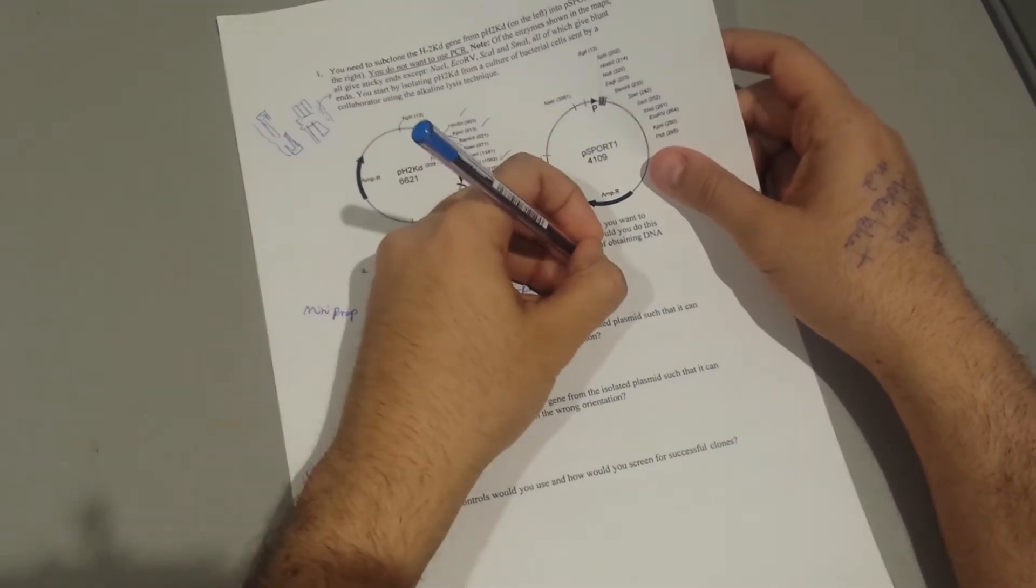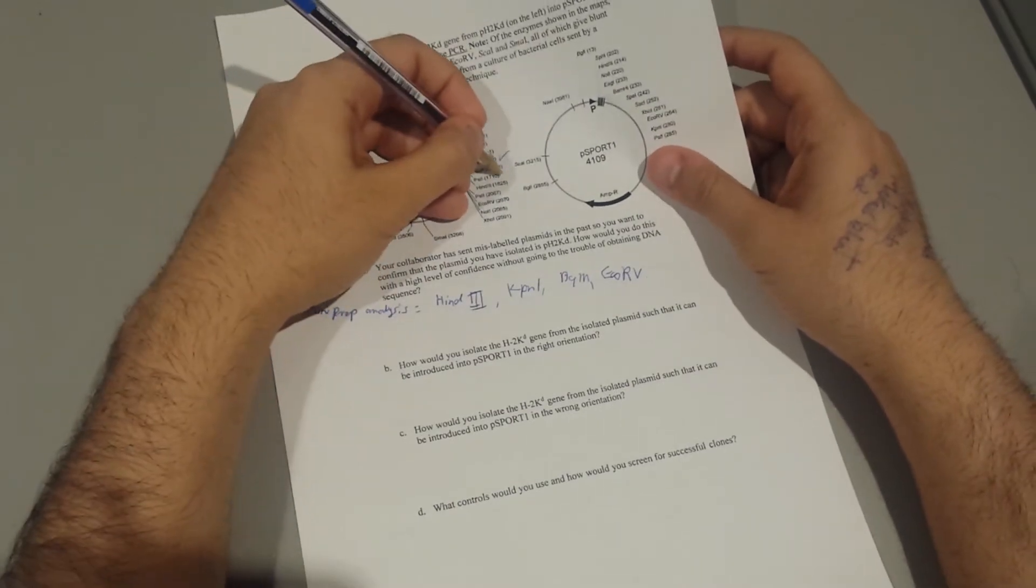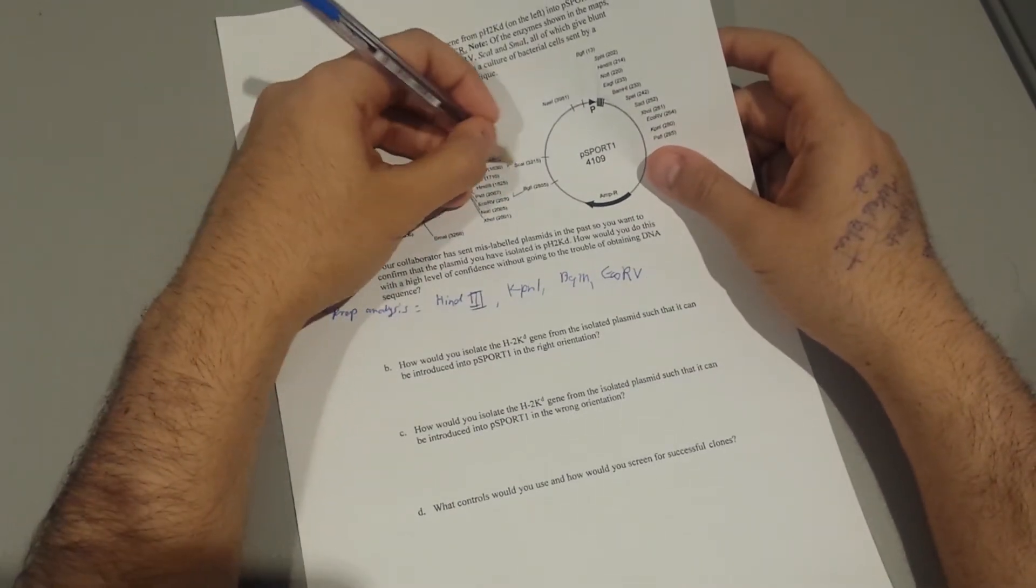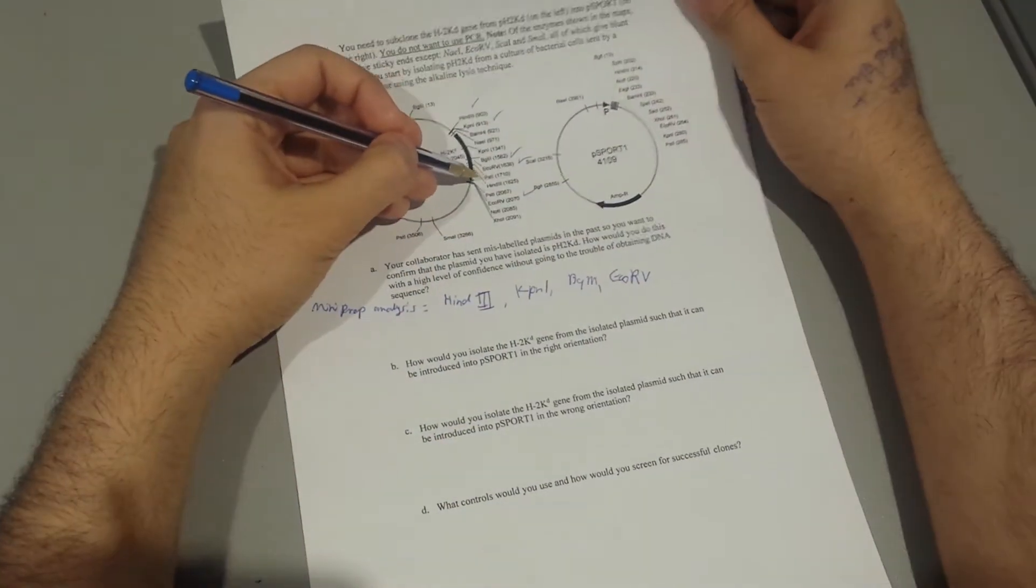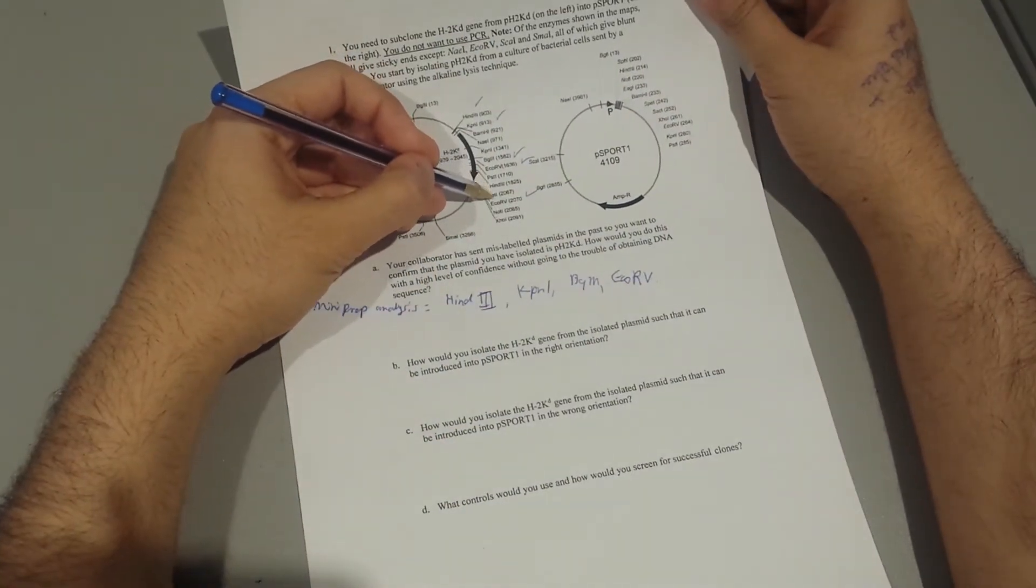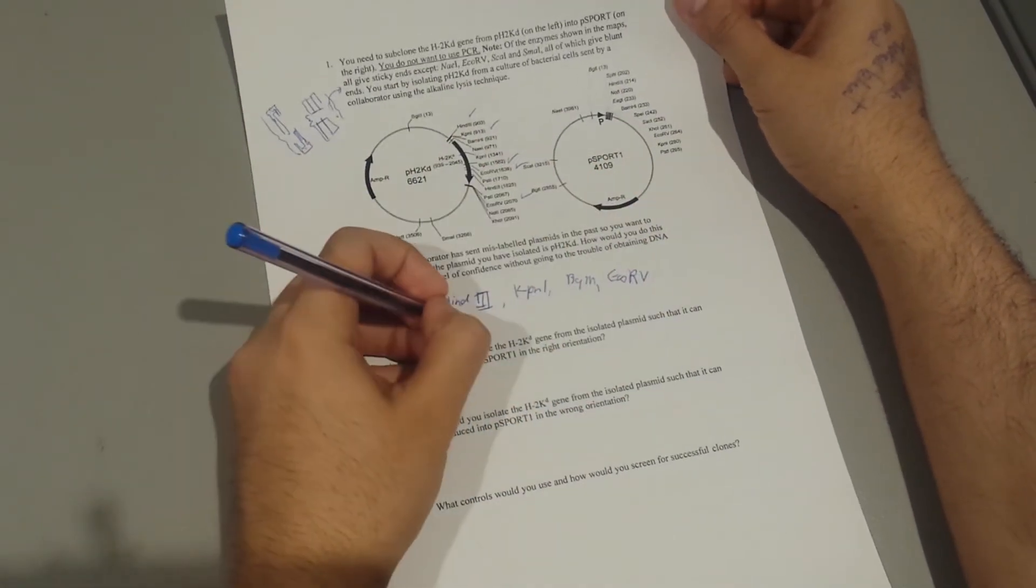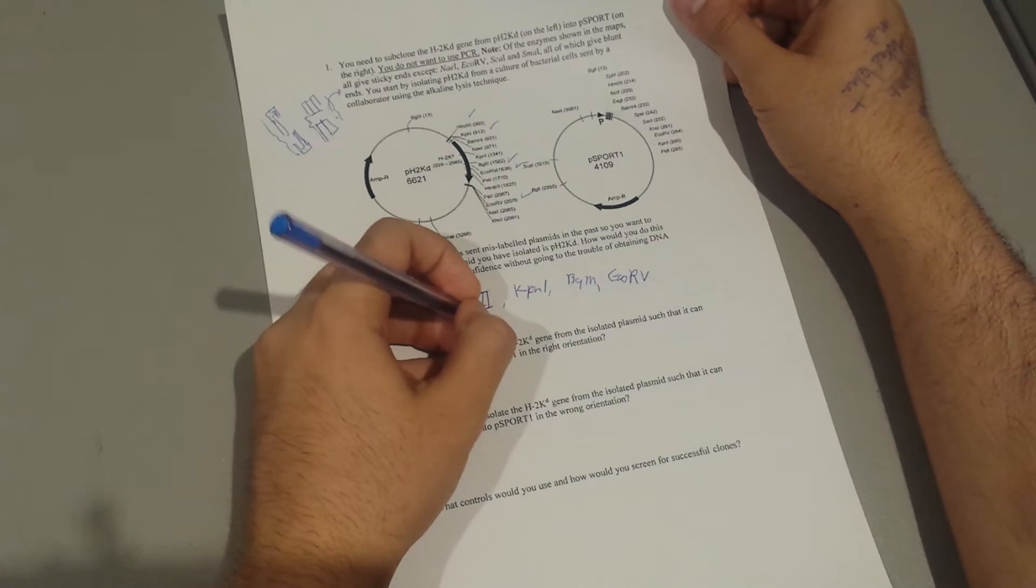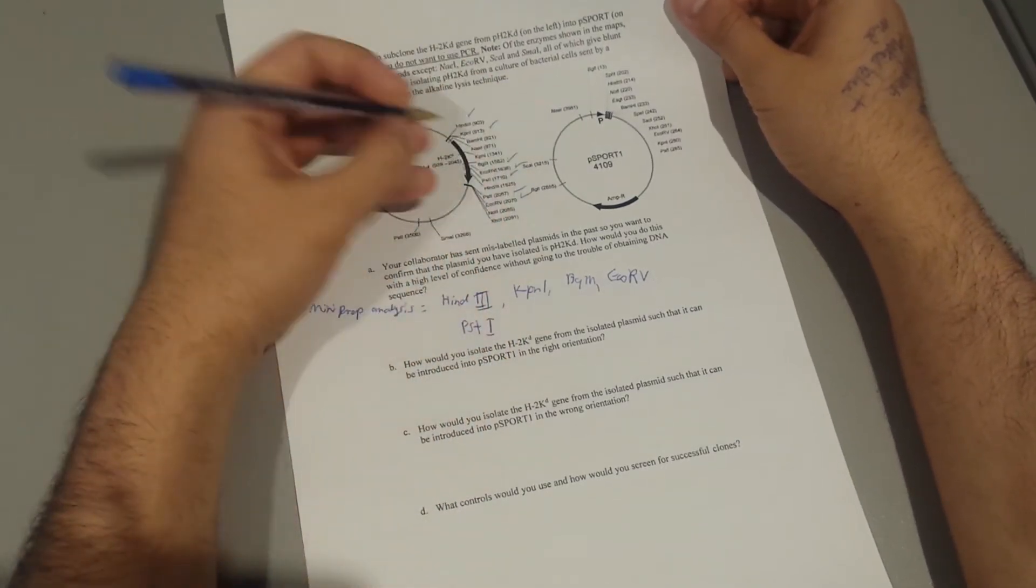EcoRV, two sites. EcoRV. PstI, we're having two sites there, so that will give you PstI.